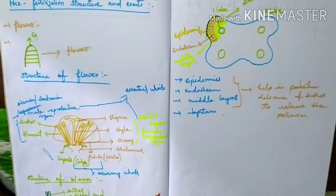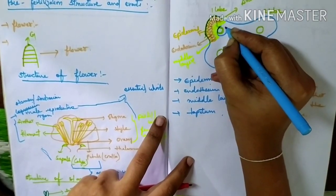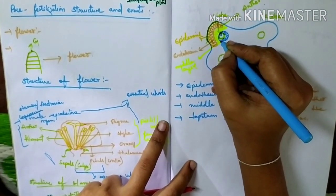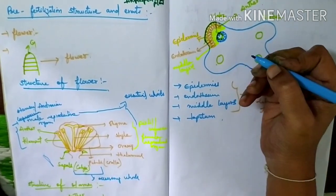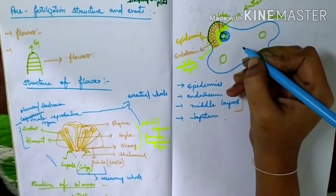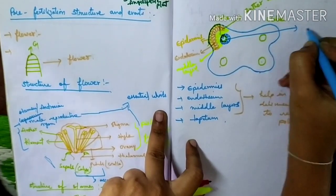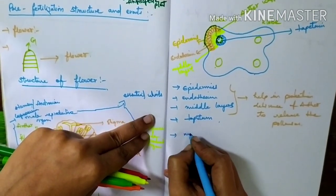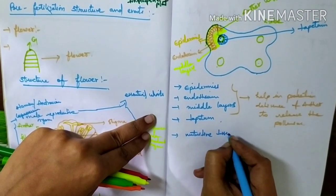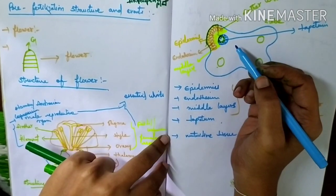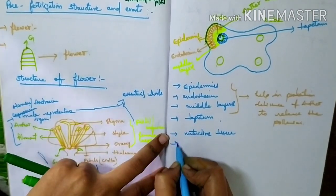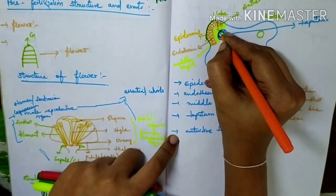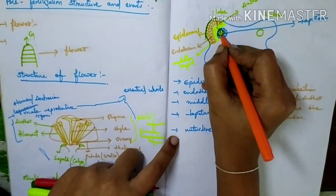The innermost layer is called the tapetum, which is pyramid-shaped and multinucleated due to endomitosis and karyokinesis. The tapetum is the nutritive tissue, which provides nourishment to the developing pollen grains. The compactly arranged cells present inside the tapetum are called sporogenous tissue.